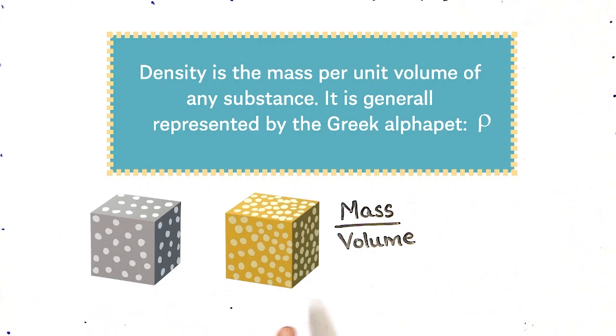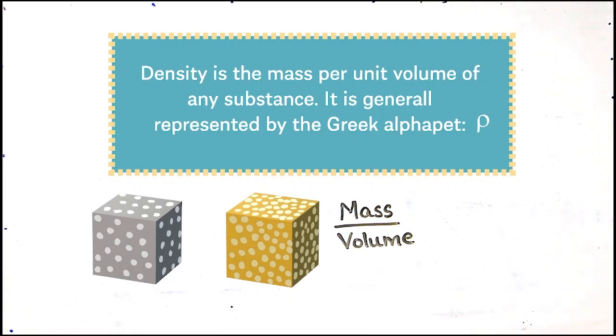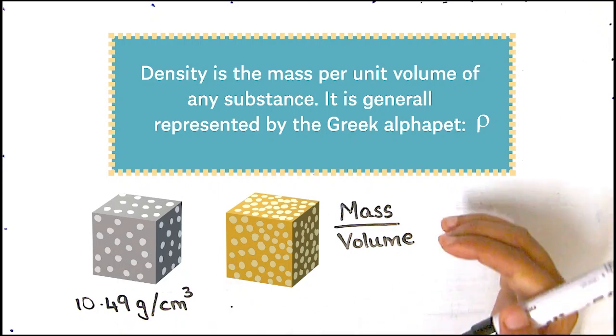If we take these cubes of silver and gold, let's assume their volume is one cubic centimeter. We already weighed these, so let's try to see if we can figure out the densities. This cube of silver weighed 10.49 grams, and this is one centimeter cubed, so the density of silver would be 10.49 grams per centimeter cubed.